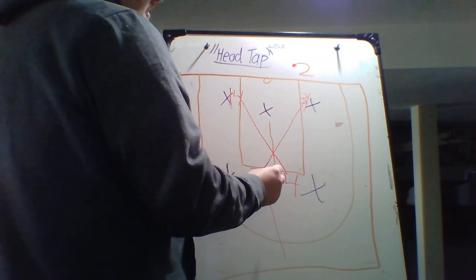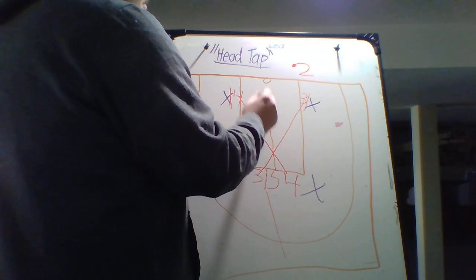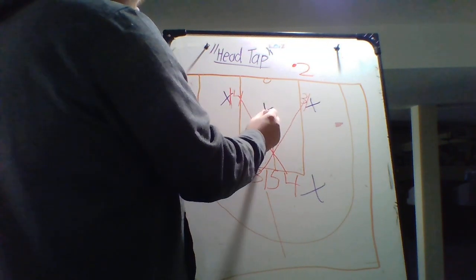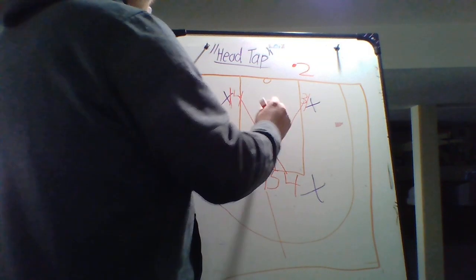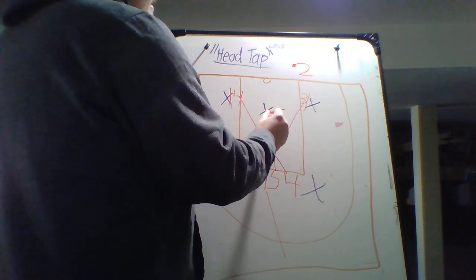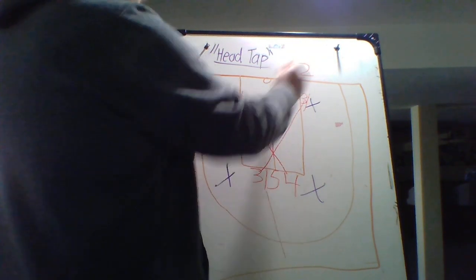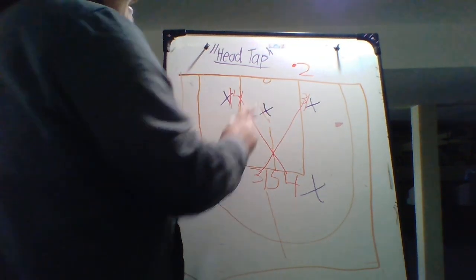Now this is the only tricky part of this. The five has to read this big. So if the big moves towards one side or the other, then they go to the opposite side. So let's say in this case, the big moves towards the three that's being sealed there, then the five is just going to attack there, easy layup. Same thing if they go to the opposite side.